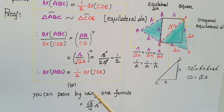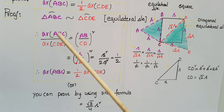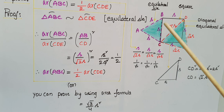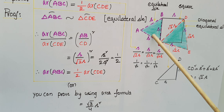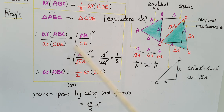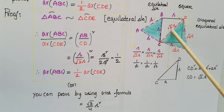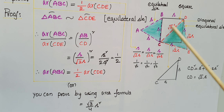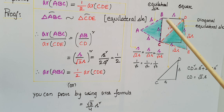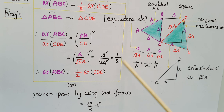So, the equilateral triangle ABC area is equal to half of triangle CDE area. You can also prove this problem by using the equilateral triangle area formula, which is (√3/4) · s². Here, area of ABC = (√3/4) · S², and for area of CDE you substitute √2S instead of S, and you will again get the ratio 1/2.